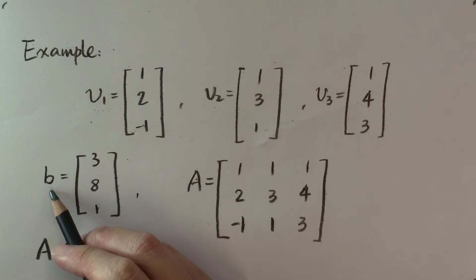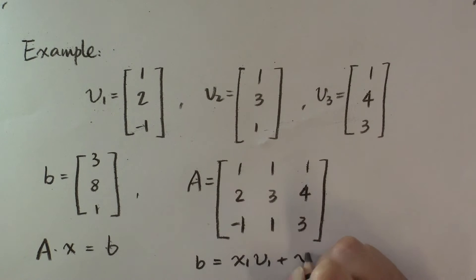If it has a solution, then b is a linear combination of these vectors, and we will know the solution x, which gives us the coefficients to express b as x₁v₁ + x₂v₂ + x₃v₃.